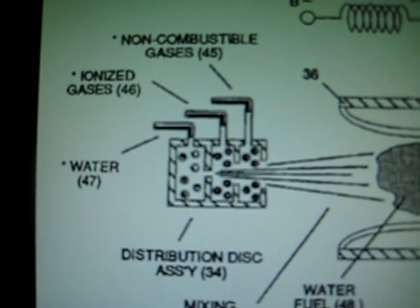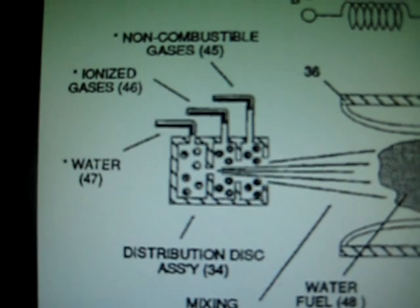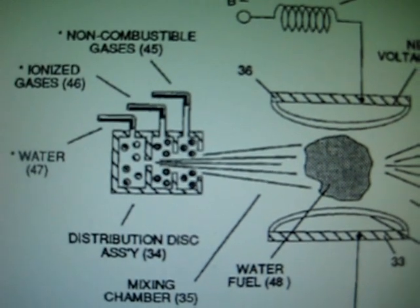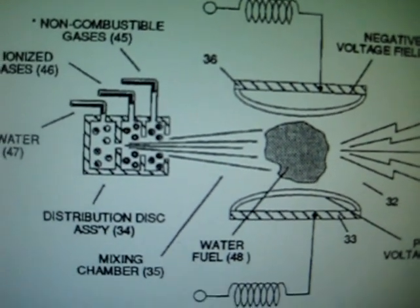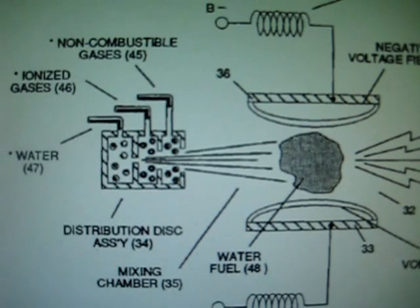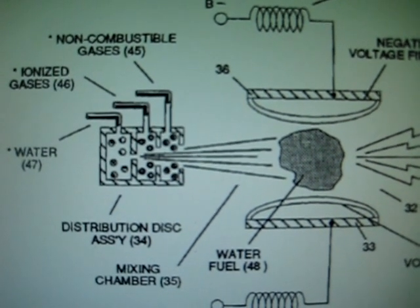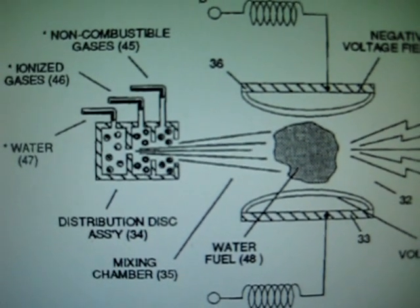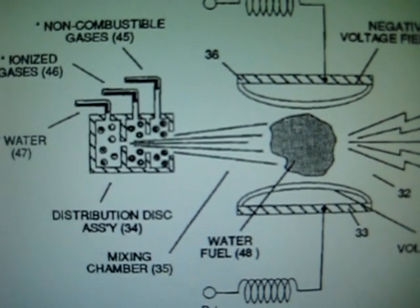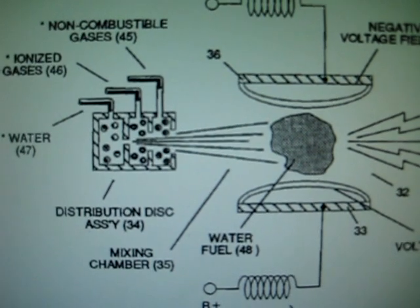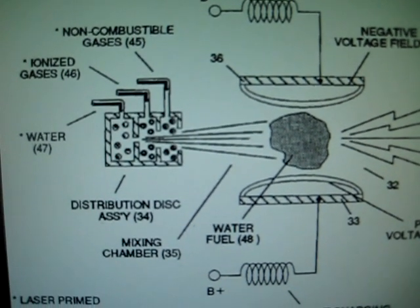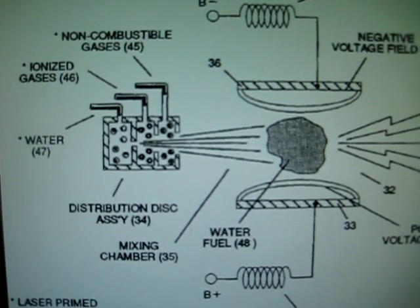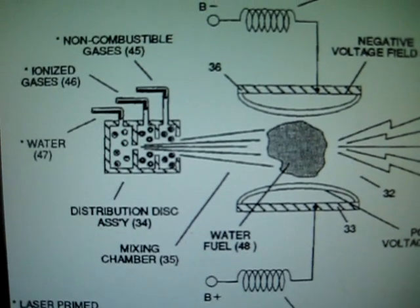Then what I believe he did is he ran the steam through the tubes and it mixed in this chamber right here, which mixes with the ionized gases and non-combustible gases. He then injects that into the spark plug fuel injector, which I believe is a high voltage injector. The reason I say that is I believe what he had is a plasma spark.